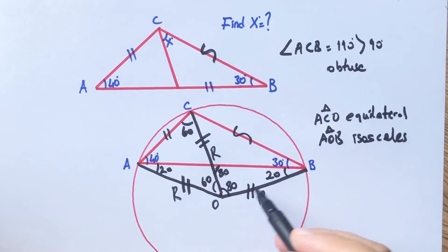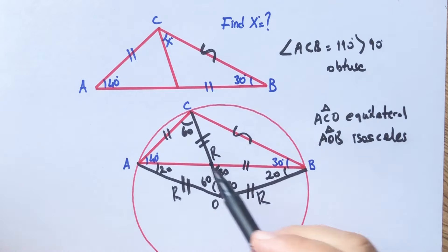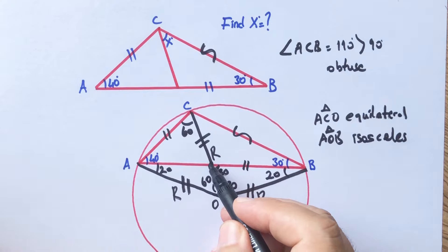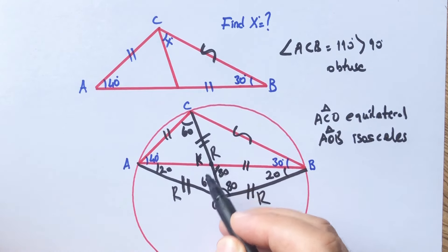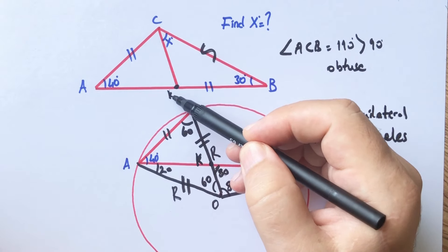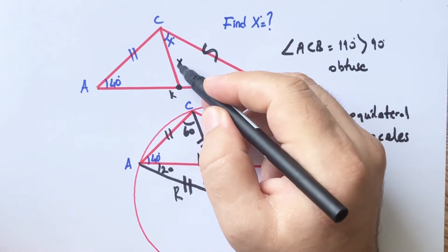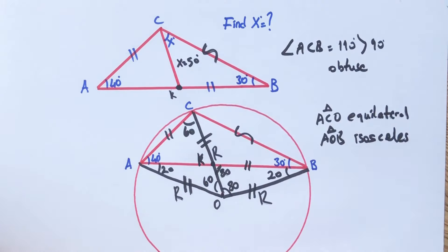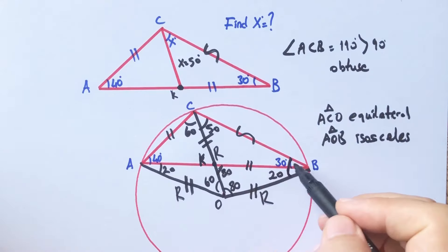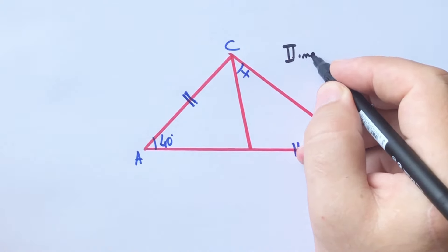That means OB must equal RB. If you notice, the triangle above is the same as the triangle below. Let's call this point K. These two triangles are exactly the same, so X is going to be 50 degrees, because here is 50 and this angle is 50. Therefore X must be 50 degrees.